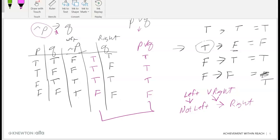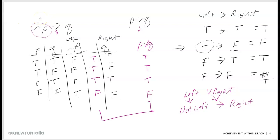If I ask you to write not A or B as a conditional, you write if A, then B — you change the sign. If I ask you to write if not C, then D as a disjunction, you write C or D. If I ask you to write if X then Y as a disjunction, you write not X or Y. In each case, you just changed the sign on the first one and changed the connective. The right side stays the same.